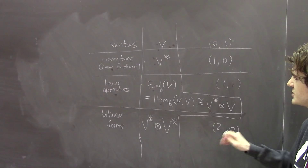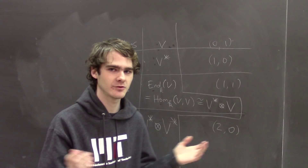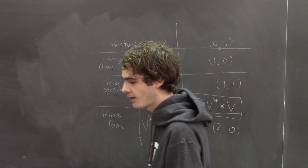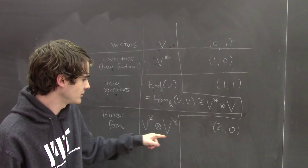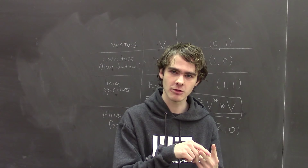You might still be unconvinced: why do we need to talk about type (r,s) tensors in general? Well, the Lie bracket of a Lie algebra isn't a bilinear form — it takes two vectors and gives you another vector. Same with the cross product: you give it two vectors and it gives you another vector. So it's of type (2,1), not (2,0).